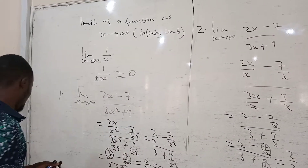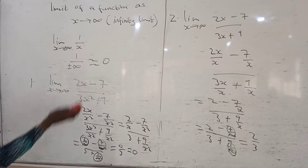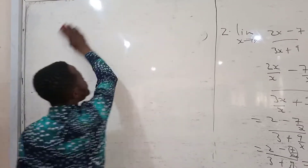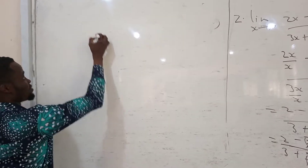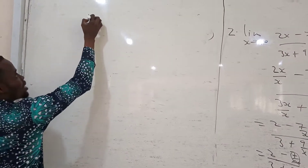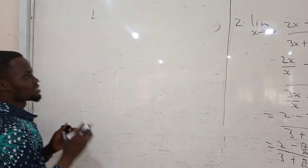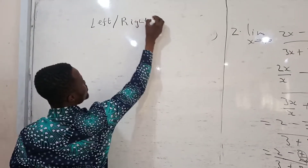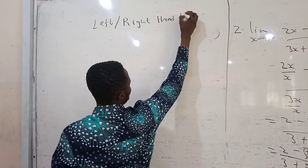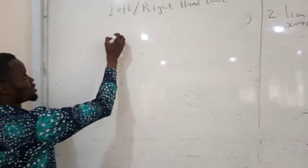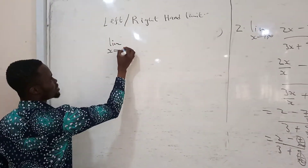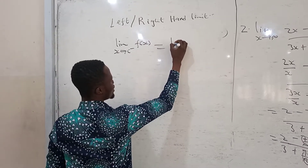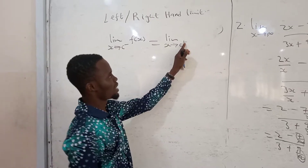The next topic is the left-hand limit and the right-hand limit. We use a minus sign to represent the left-hand limit — that is, the limit as x approaches a value from the left. We use a plus sign to represent the right-hand limit — the limit as x approaches a value from the right. The overall limit exists only if both sides are equal.